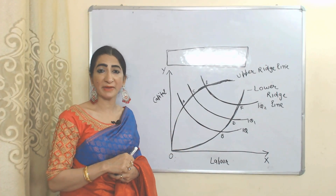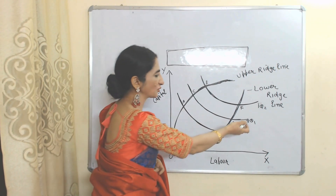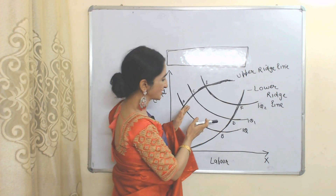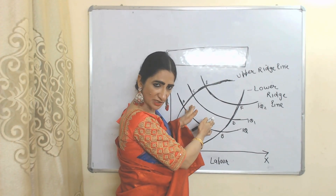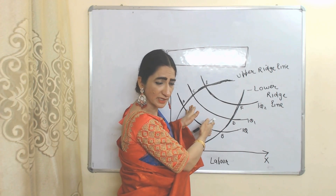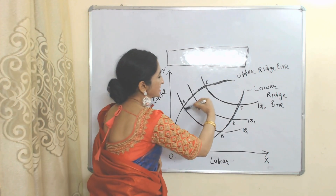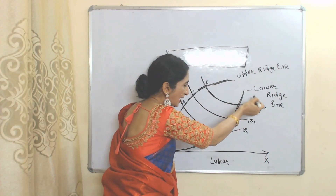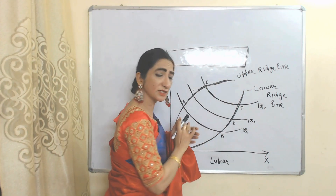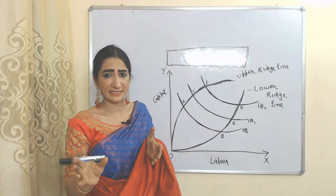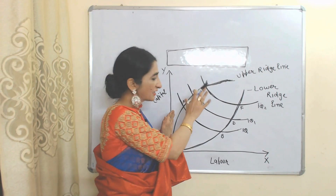Here we have an isoquant map. As we know, an isoquant map consists of many isoquant curves — here we have IQ1, IQ2, and more. This area is the efficient region, but these other areas are not the efficient region. Here we have two ridgelines: this is the upper ridgeline and this is the lower ridgeline. These ridgelines clearly tell us which one is the efficient region and which one is not.